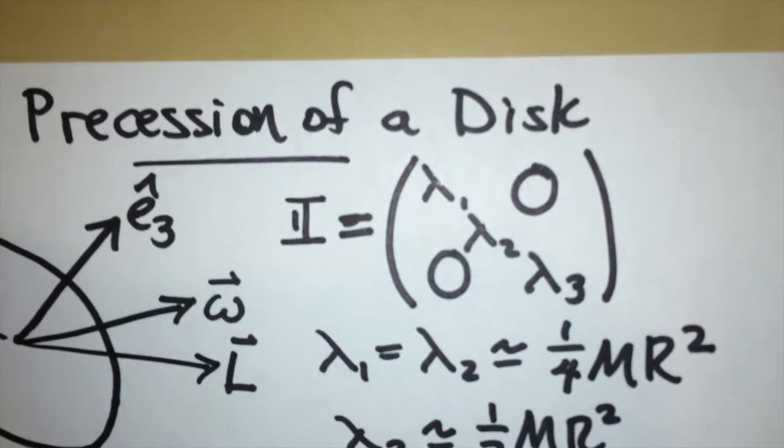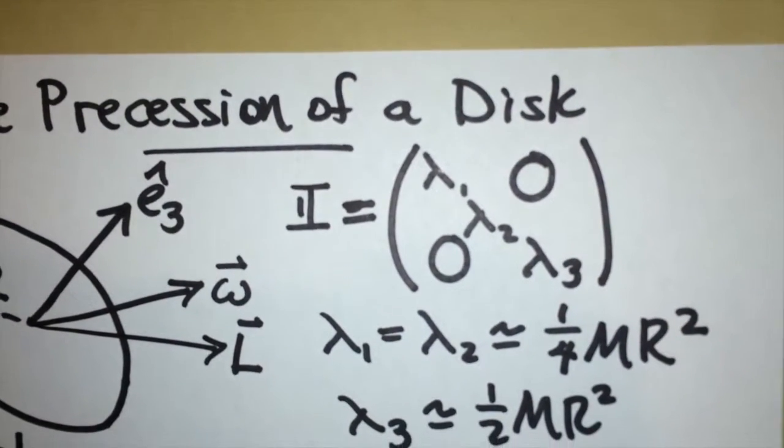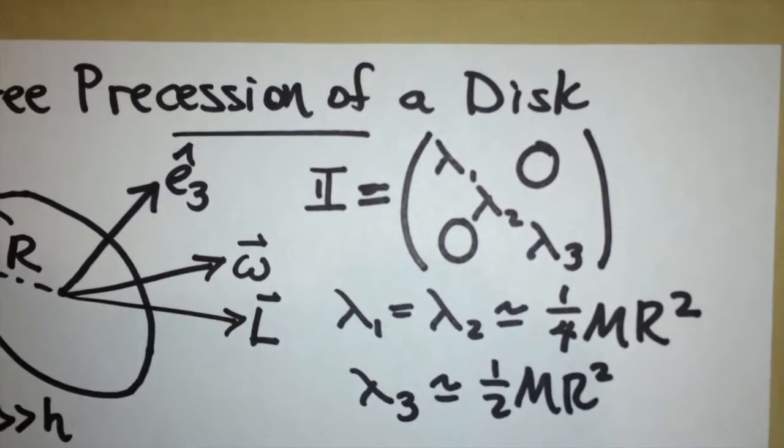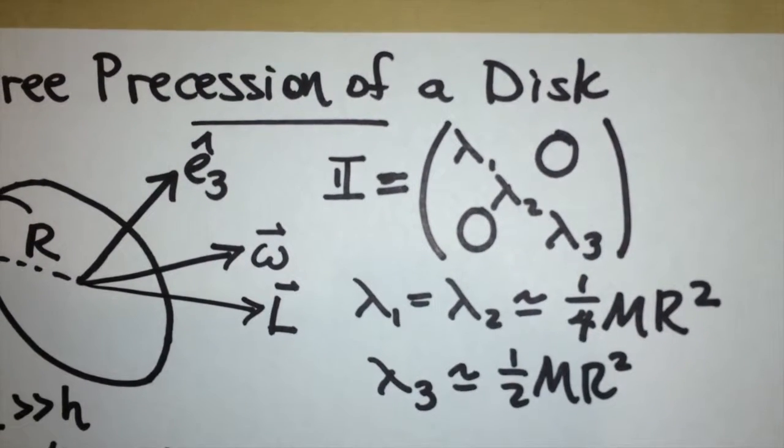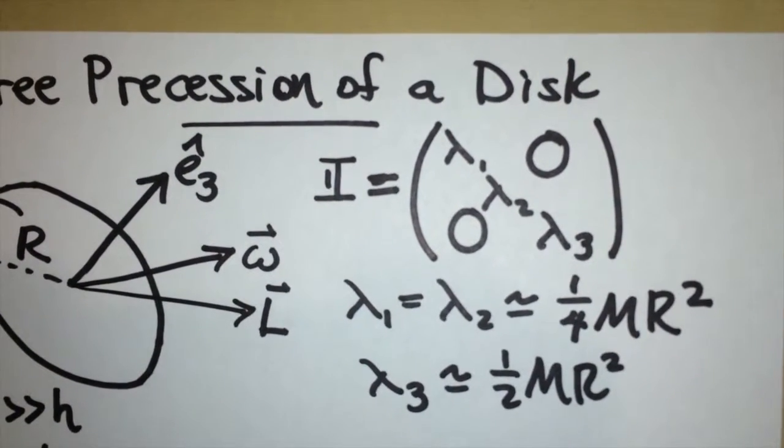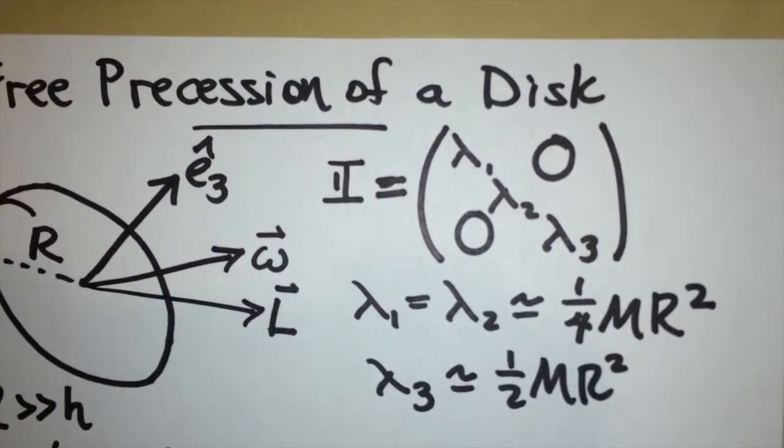In the body frame, moments of inertia are given by lambda 1, lambda 2, lambda 3. The moments lambda 1 and lambda 2 are equal and approximately equal to a quarter m r squared, while the third moment, the largest moment, is a half m r squared.